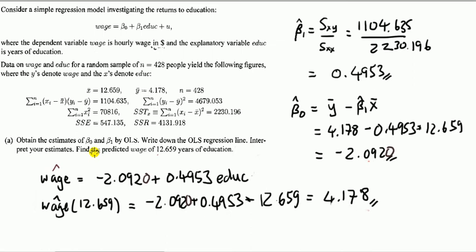Okay, next question, final question, write down a predicted wage, given that many years of education. Just means just substitute for education that number, and work out the right-hand side, which gives me this.